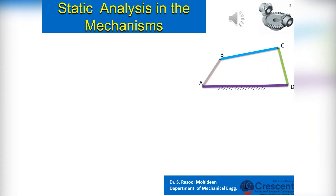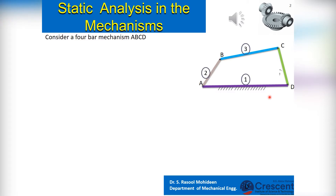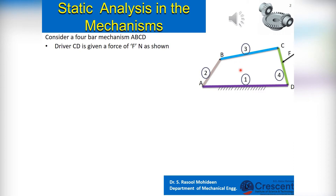By applying the concepts of constrained forces and conditions of equilibrium we have seen so far, the static analysis of mechanisms can be carried out thoroughly. Consider a 4-bar mechanism ABCD as shown in figure 1. Driving link CD is given the force of F newtons as shown. The task is to find the torque T2 developed in the follower link AB.